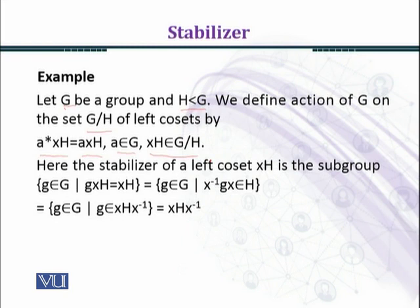Here the stabilizer of the left coset xH is the subgroup consisting of g belonging to G such that gxH equals xH.